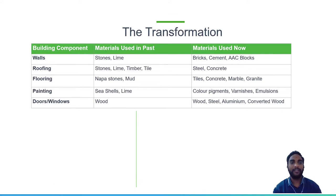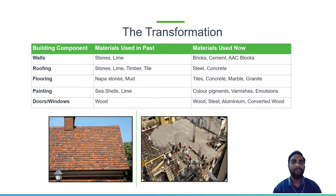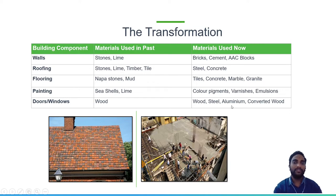Coming to roofing: they used to have stones, lime, timber, or tile for roofing. But as those were temporary structures, those kinds of materials were used. Now, with the advent of technology, we have steel and concrete because they are more durable. Even though the cost is more than timber, tile, and stones, steel and concrete possess greater durability, so nowadays we are using steel and concrete.